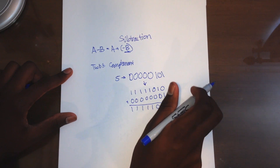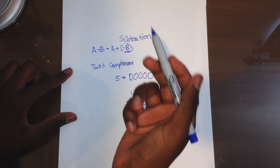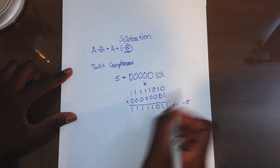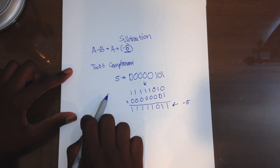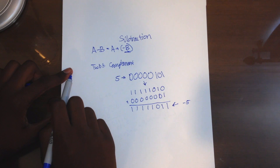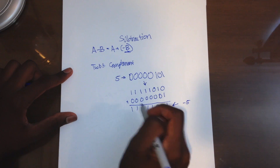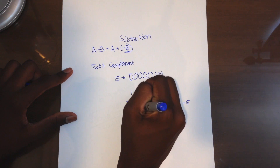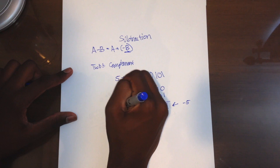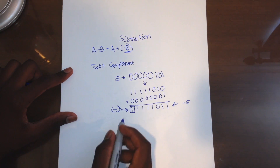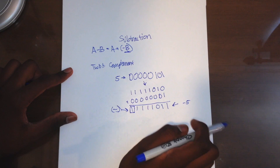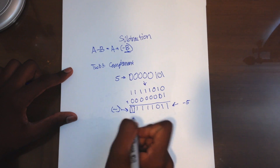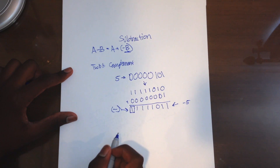Now, the way the computer distinguishes between negative numbers and positive numbers — you could ask, why isn't this number just 252? Well, it's because of this first bit. This first bit tells the computer that it is, in fact, a negative number. The computer knows that this is the negative number negative 5.